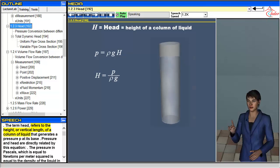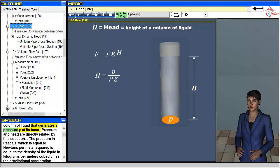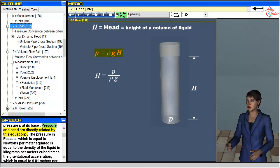The term head refers to the height, or vertical length, of a column of liquid that generates a pressure P at its base. Pressure and head are directly related by this equation.